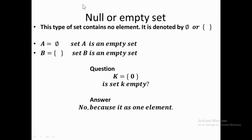We also have null sets or empty sets. Another term in set theory is called the null set or empty set. A set is empty when it has no element at all — this type of set contains no element whatsoever.